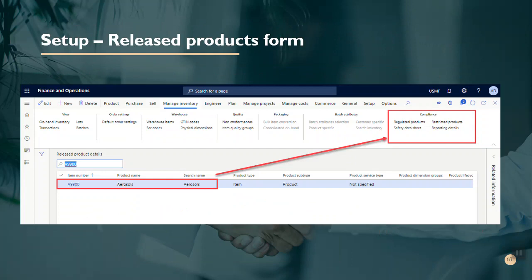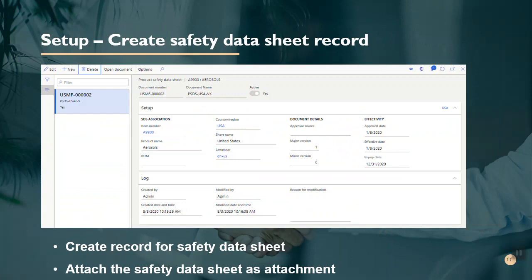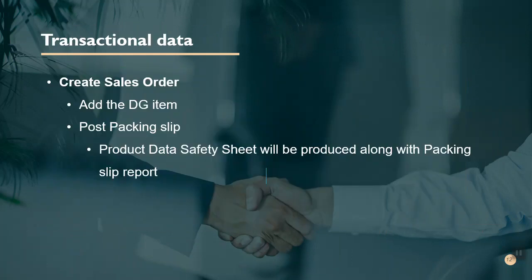Further, you go to the dangerous good product on the released products form and check the compliance buttons. For this demonstration, after verifying all the setups, we will create a sales order, add the dangerous good item, and post the packing slip. The expected outcome is that the product data safety sheet will be produced along with the packing slip report.